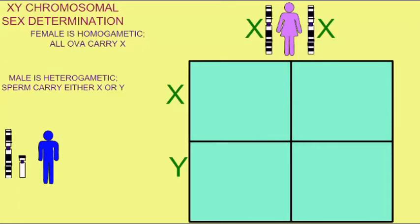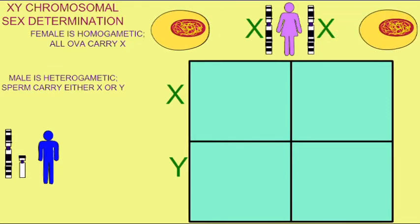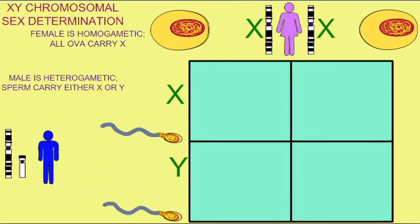A number of organisms use a set of dimorphic sex chromosomes to determine gender, and in the XY sex determination system, the males receive an X and a Y chromosome, and thus are heterogametic.